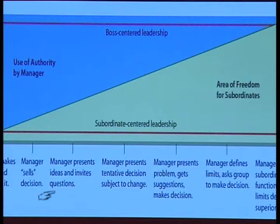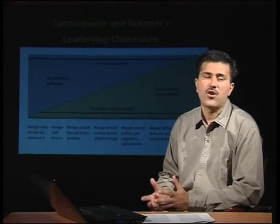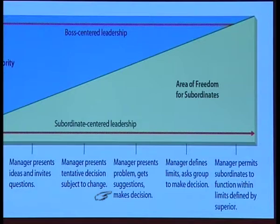Step three: the manager presents ideas and invites questions from staff. Step four — the middle path recommended for the Indian scenario — represents 50% boss-centric and 50% subordinate-centric leadership: the manager presents a tentative decision subject to change, inviting logical counter-proposals. Step five: the manager presents the problem, gets suggestions from employees, and then makes the decision. As manager authority decreases and subordinate freedom increases, it forms a continuum.